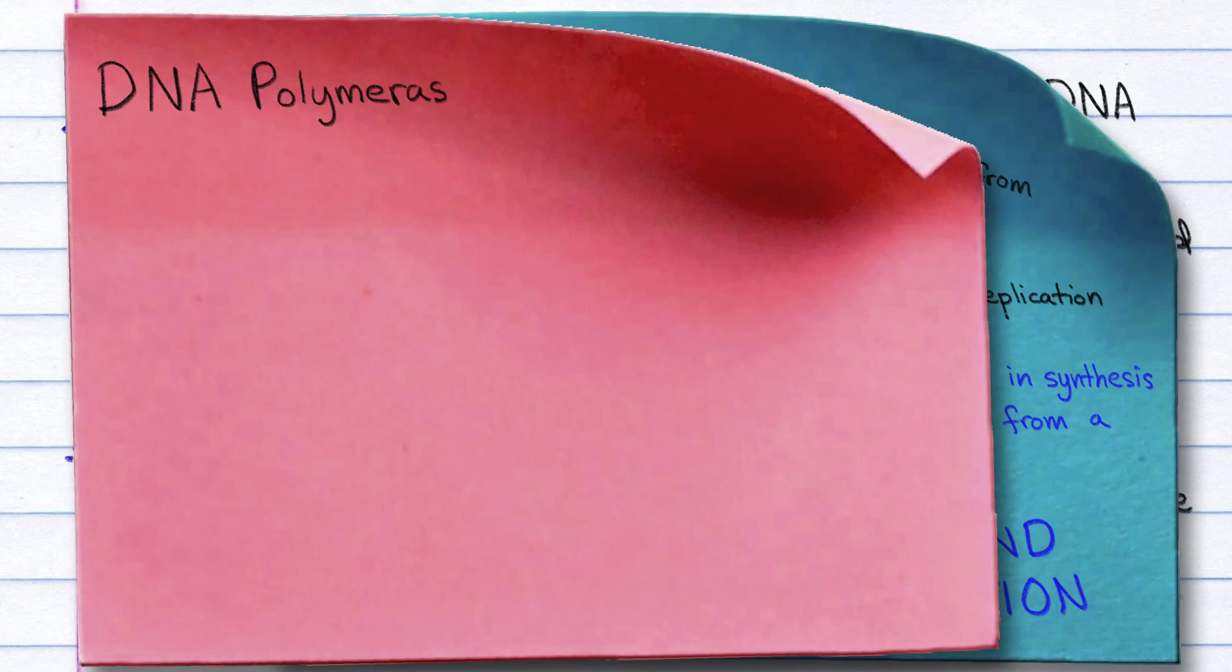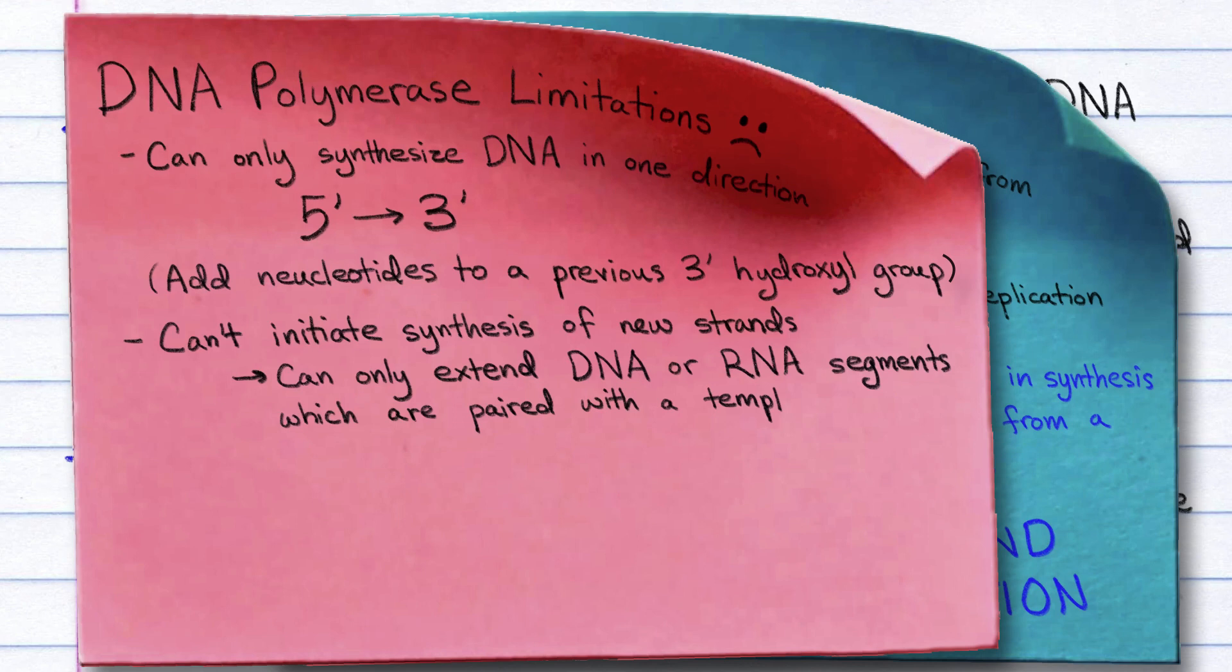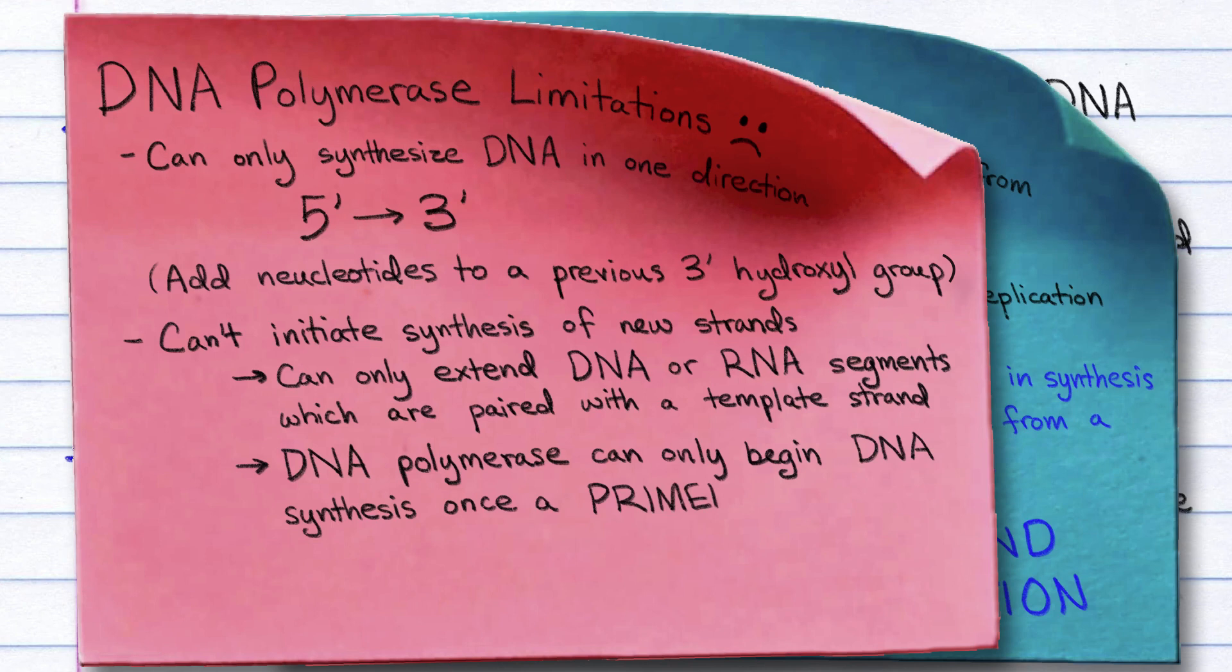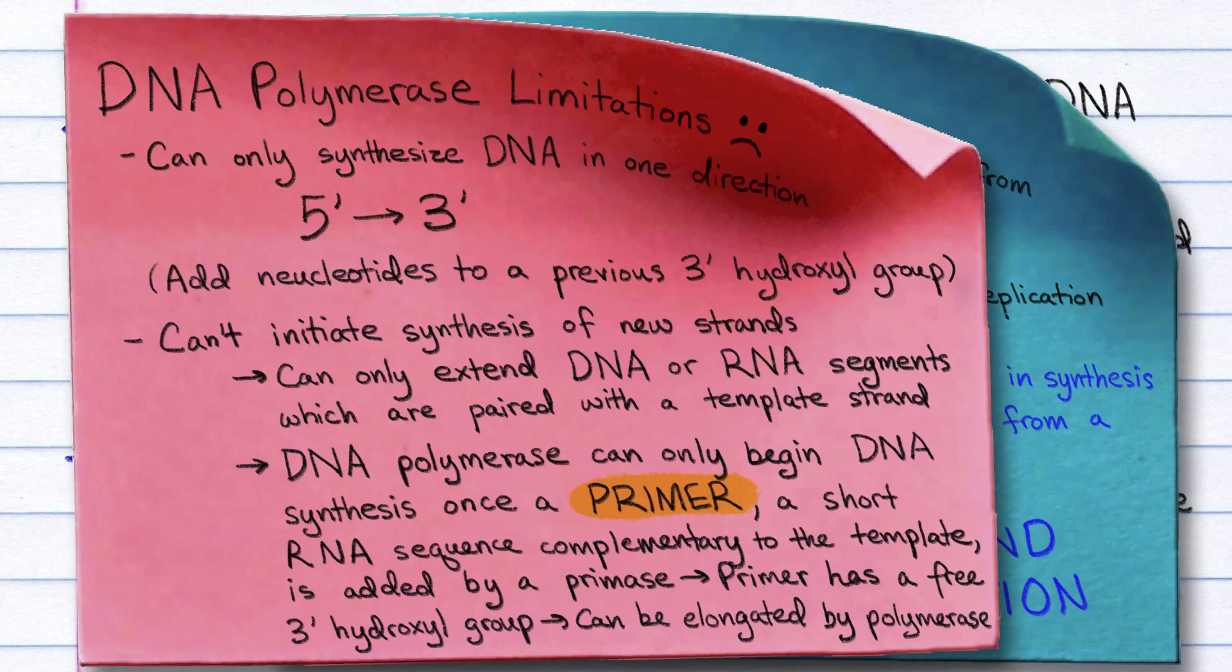However, DNA polymerases have several limitations. They can only synthesize DNA in one direction, 5' to 3', adding nucleotides to a previous 3' hydroxyl group. They also cannot initiate the synthesis of new strands, but can only extend DNA or RNA segments which are paired with a template strand. Therefore, DNA polymerase can only begin DNA synthesis once a primer, a short RNA sequence complementary to the template sequence, is added by a primase. Because the primer has a 3' hydroxyl group, it can be elongated by DNA polymerase.